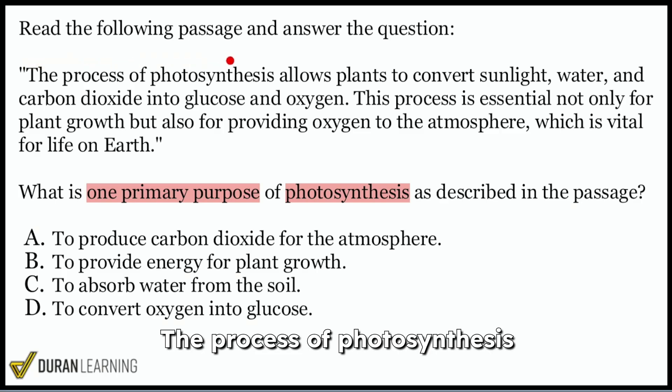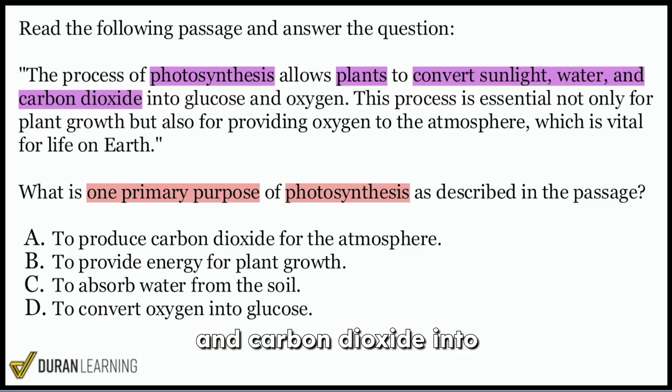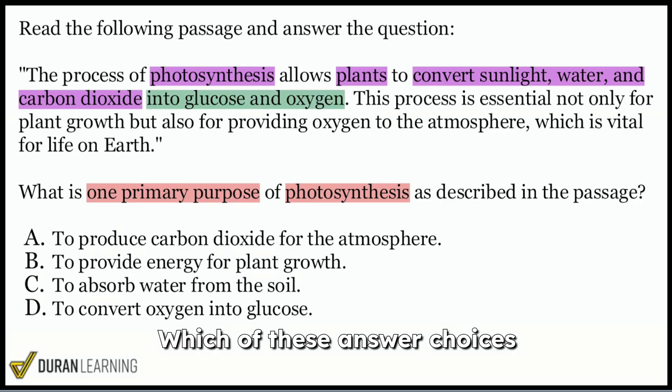So here we go. We'll read the passage and answer the question. The process of photosynthesis allows plants to convert sunlight, water, and carbon dioxide into glucose and oxygen. This process is essential, not only for plant growth, but also for providing oxygen to the atmosphere, which is vital for life on earth. So again, process of photosynthesis allows plants to convert sunlight, water, and carbon dioxide into glucose and oxygen. Which of these answer choices embodies this?